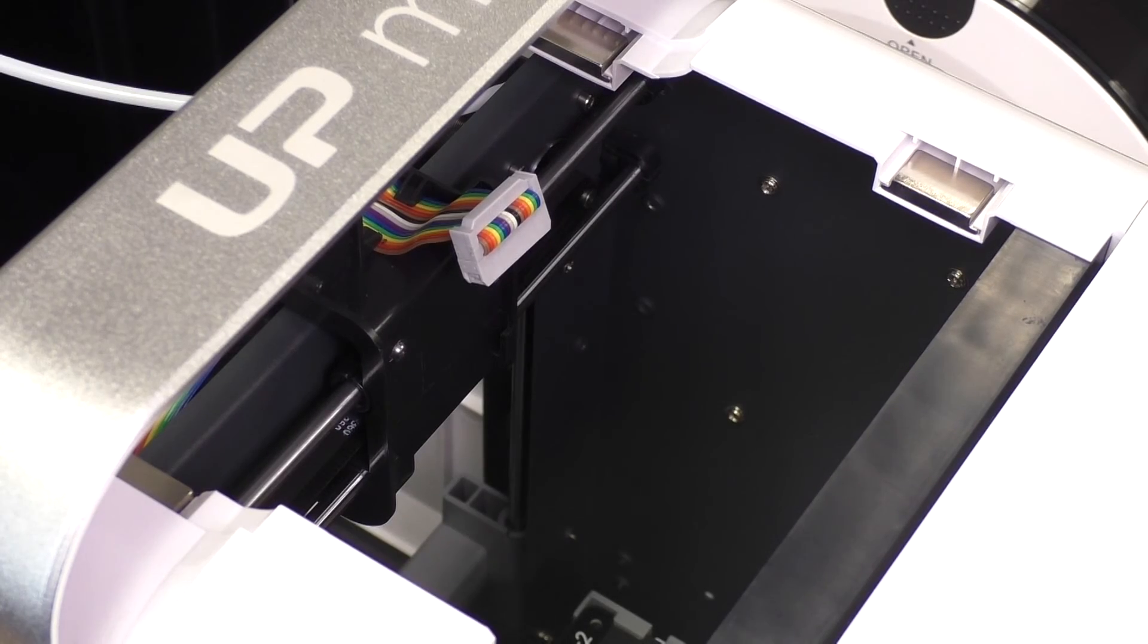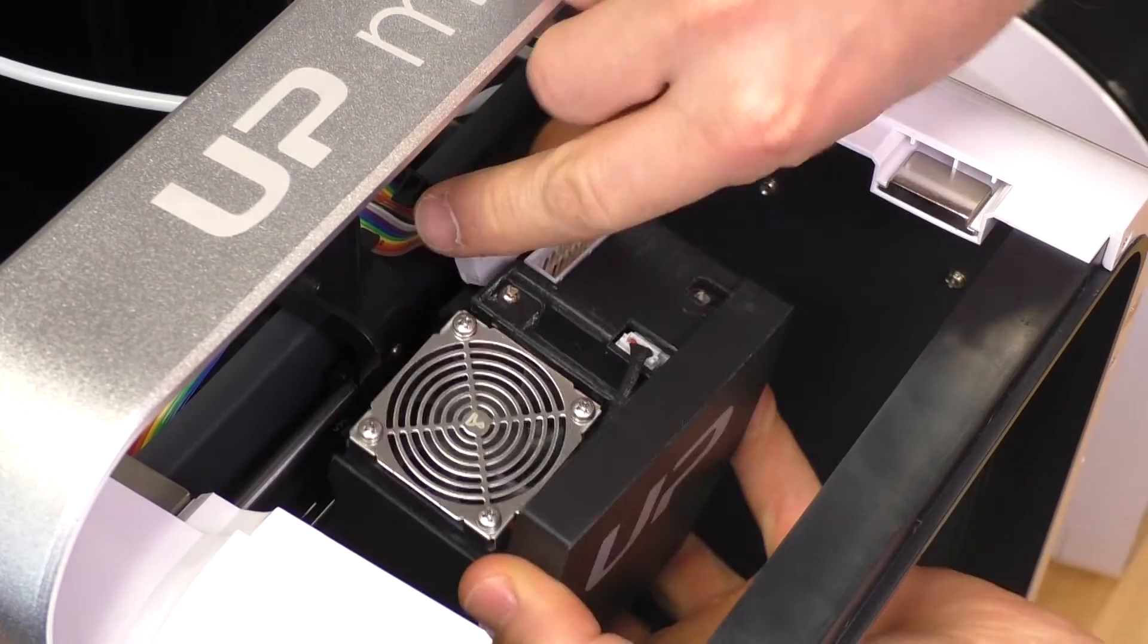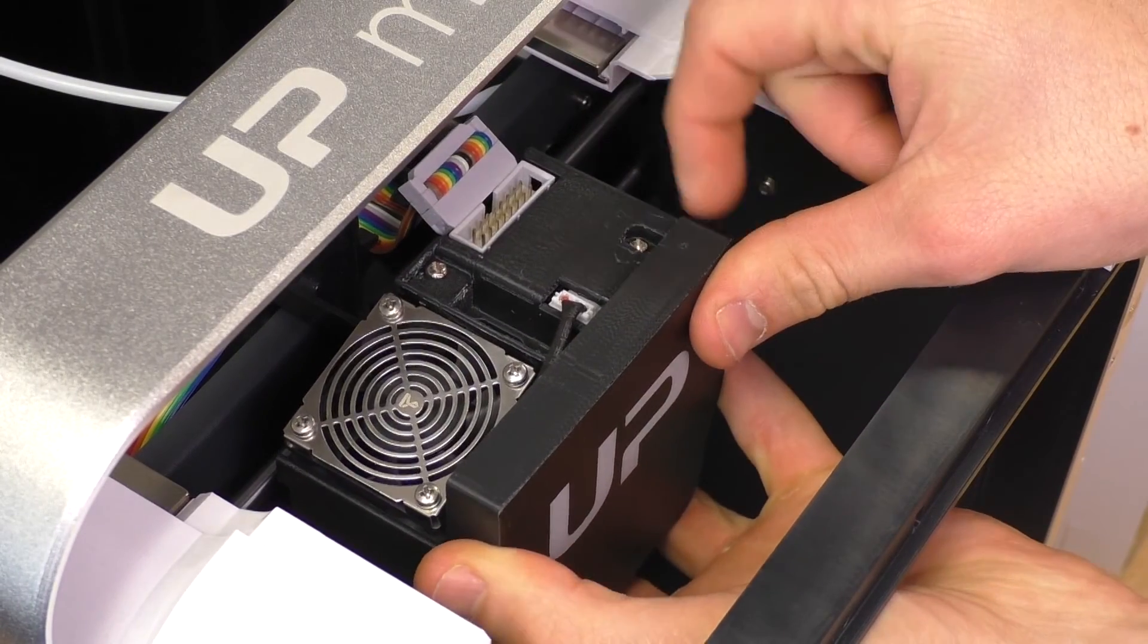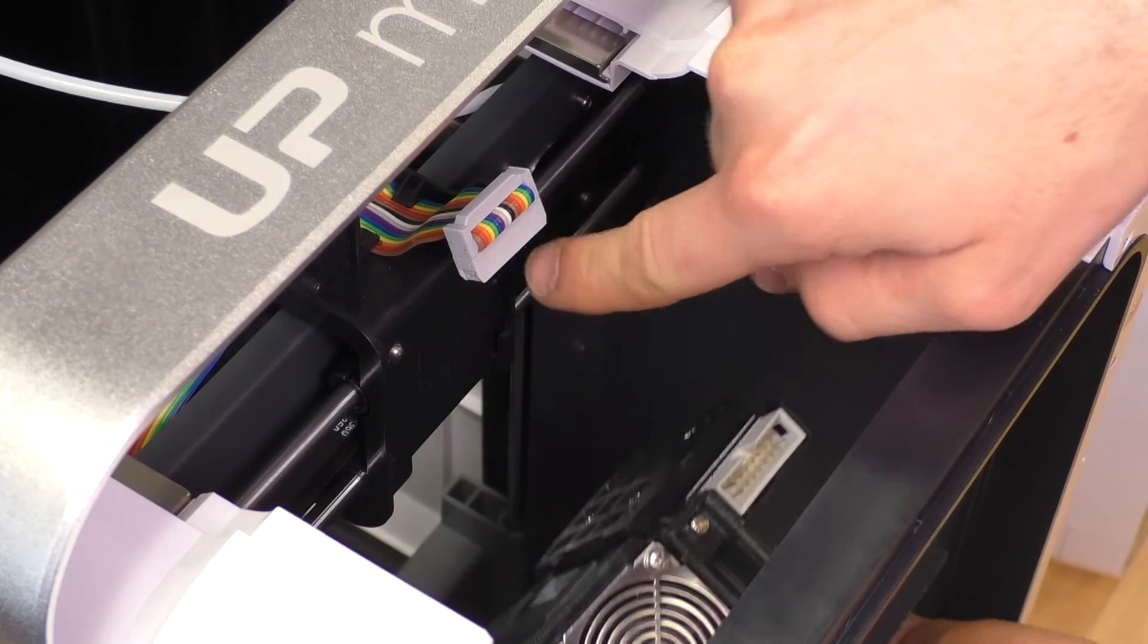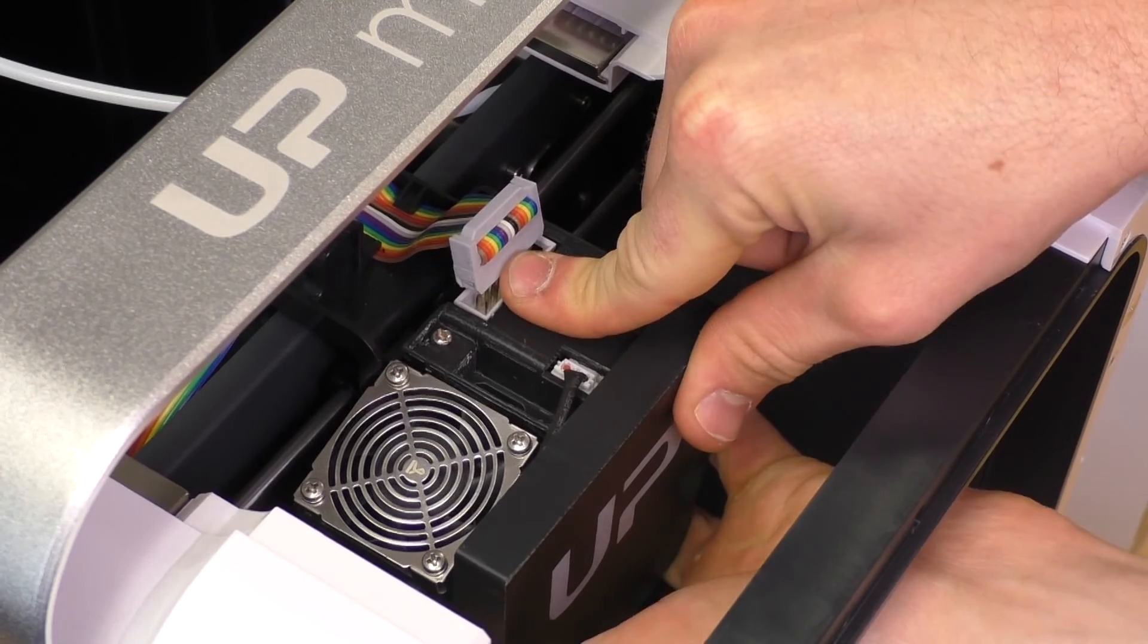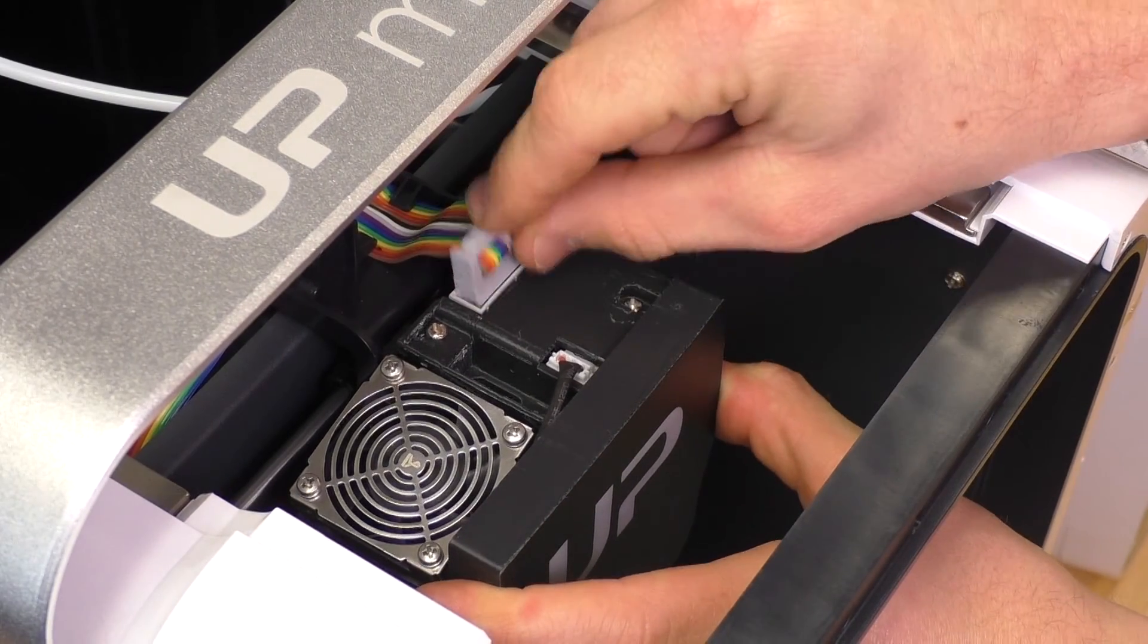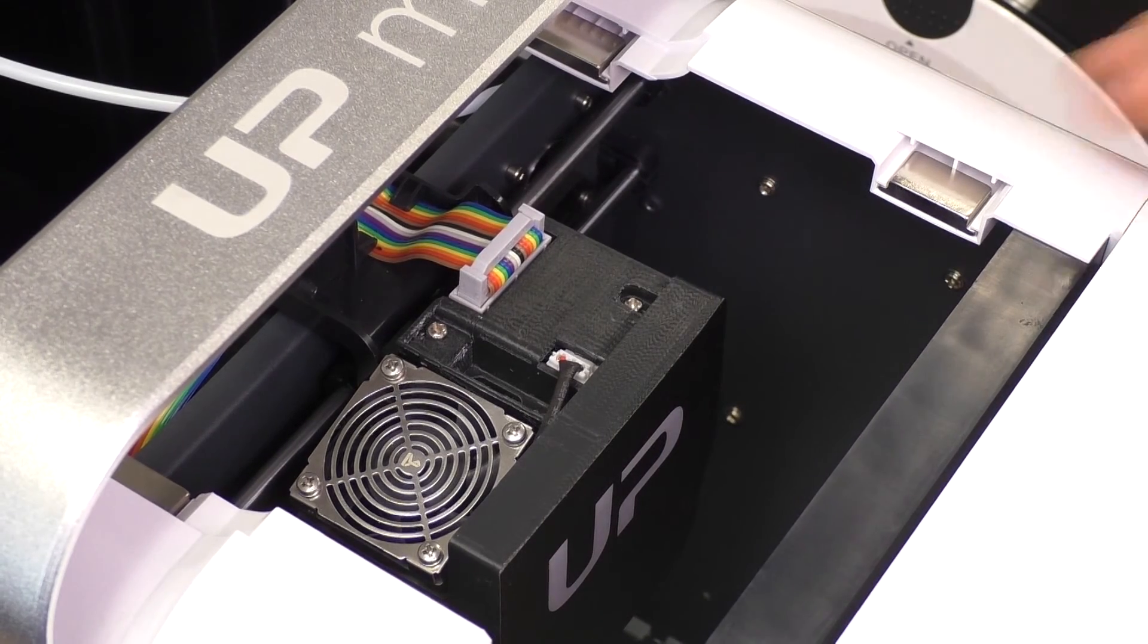To install the printhead back in your printer, the procedure is just the same as when we took it out. So make sure it slots into place. There's these four locating sections and four locating sections on the mount. Slide downwards. Make sure you hear a click. And then push the rainbow cable back into its slot. Ready to print.